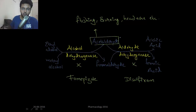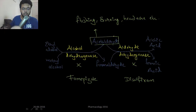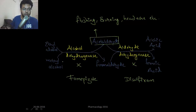Let's look at alcohol metabolism. Let's say one fine day you have your beautiful peg. Once the alcohol is in your blood, it is metabolized to acetaldehyde by alcohol dehydrogenase. Now this acetaldehyde, if it accumulates in your blood, it can produce flushing, burning sensation, headache, and all sorts of bad things. But the good news is that acetaldehyde is rapidly converted to acetic acid by aldehyde dehydrogenase under normal conditions.